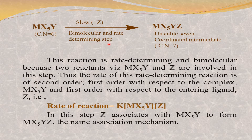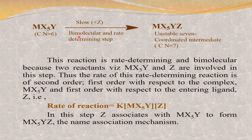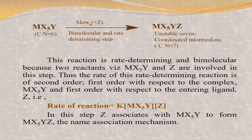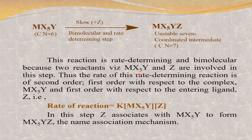The complex MX5Y has coordination number 6 (5 plus 1). The incoming ligand Z attacks the metal, forming the unstable 7-coordinated intermediate MX5YZ. This is a bimolecular and rate-determining step — the slow step is always the rate-determining step. The species present in the slow step determine the rate of reaction: the complex MX5Y and Z are both involved.